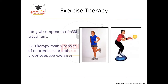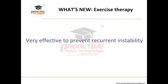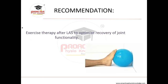For exercise therapy, four systematic reviews of sufficient quality found that exercise therapy has a good effect in preventing chronic ankle instability. An integrated exercise therapy program is essential. Exercise therapy is very effective in improving proprioception and strength. The recommendation is that exercise therapy after lateral ankle sprain optimizes recovery of joint function, because good sensory integration, articular integration, and central nervous system involvement are needed for optimal joint function.